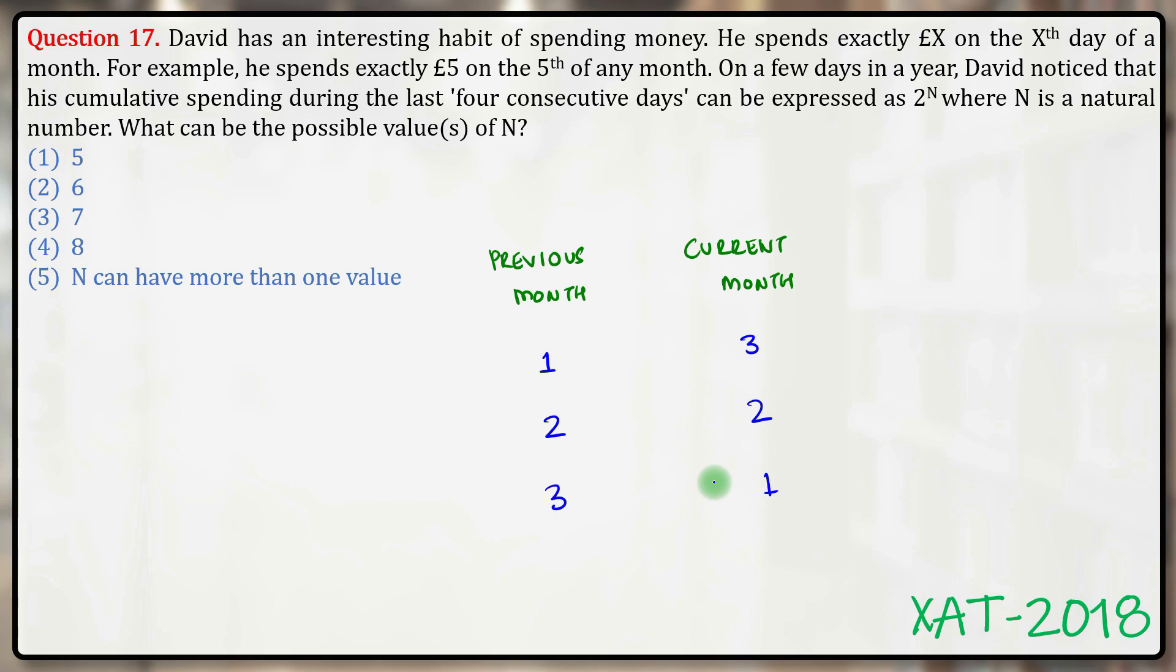Let's think about this case when one date is from the previous month. It can either be 28, 29, 30, or 31.